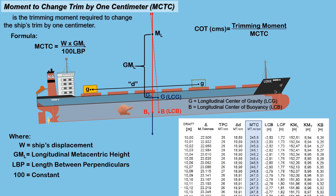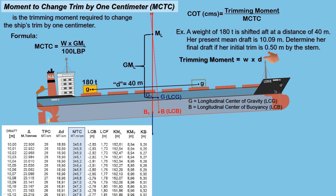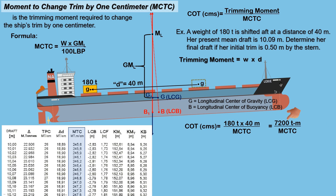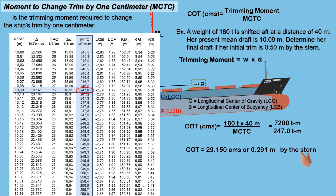We can determine the change of trim using: change of trim = trimming moment ÷ MCTC. Consider a scenario where a weight of 180 tons is shifted aft at a distance of 40 meters, with a present mean draft of 10.09 meters. Determine the final draft if the initial trim is 0.50 meter by the stern. The trimming moment is 180 × 40 = 7,200 ton-meters. At a mean draft of 10.09 meters, the MCTC is 247 ton-meters. The change of trim is 7,200 ÷ 247 = 29.150 centimeters, or 0.291 meter, by the stern, since the weight was shifted aft.